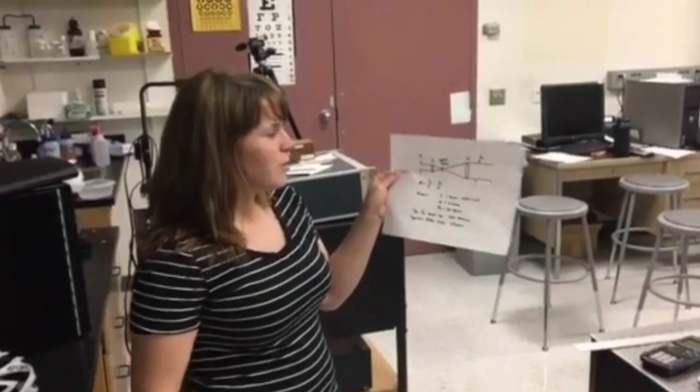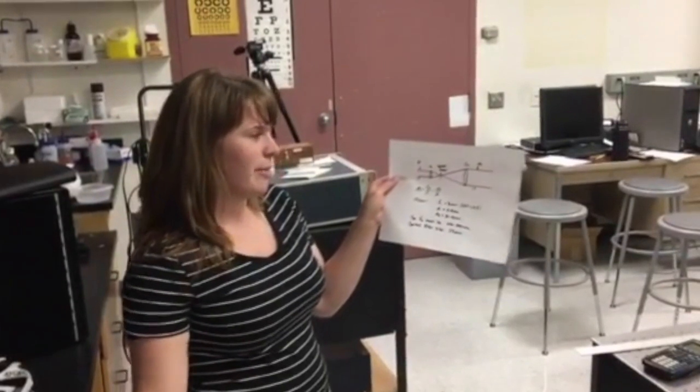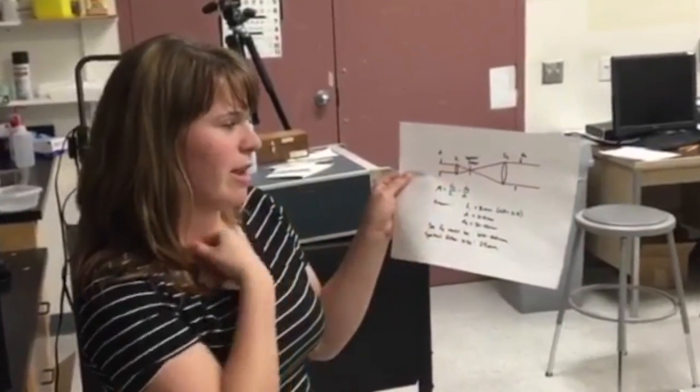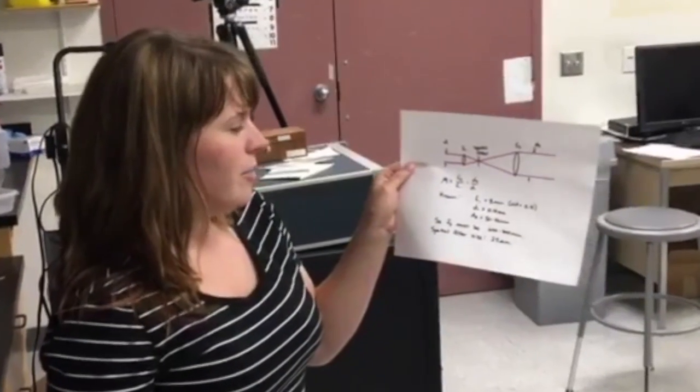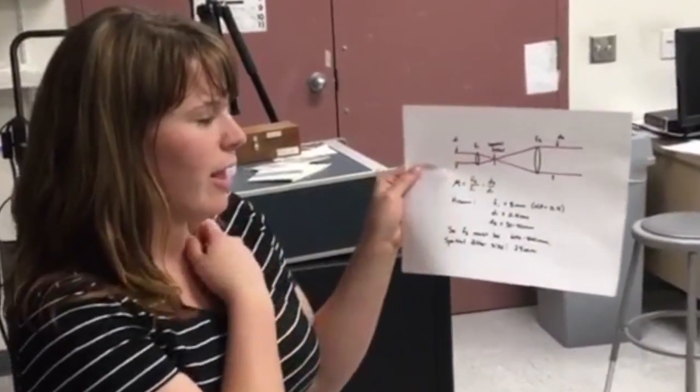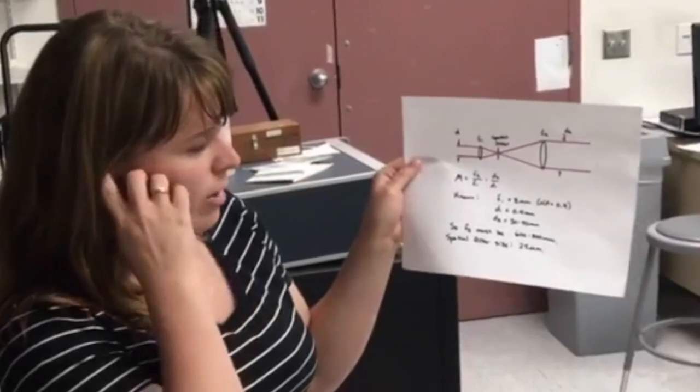We all shared the load. The first part of this lab was to design a Keplerian beam expander, which consists of two positive lenses and a spatial filter at the intermediate focal plane. We were given a microscope objective for the first lens that has a focal length of 8 mm and a numerical aperture of 0.4.